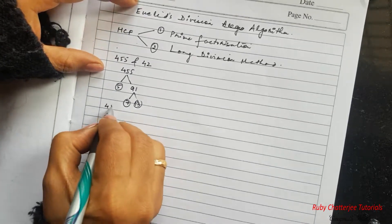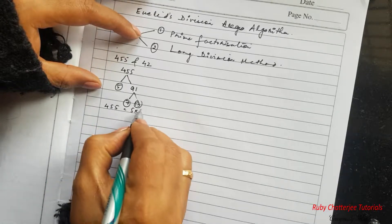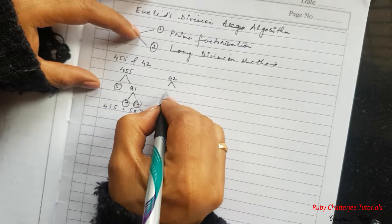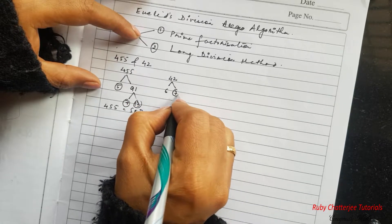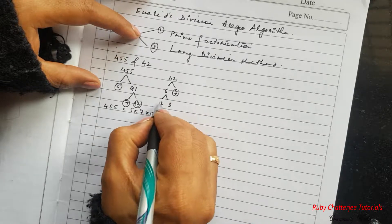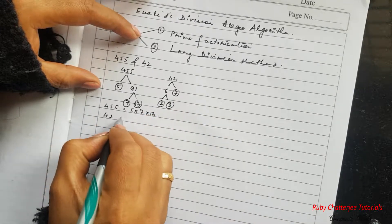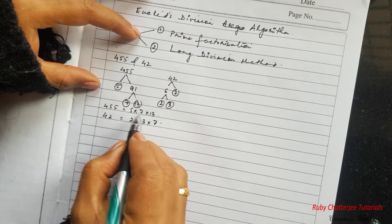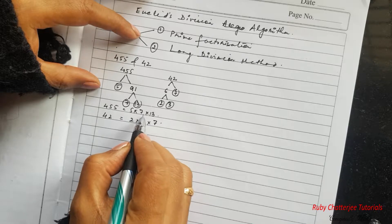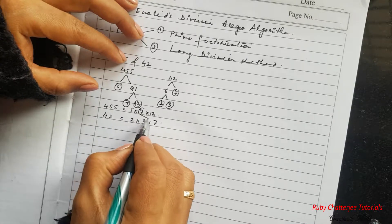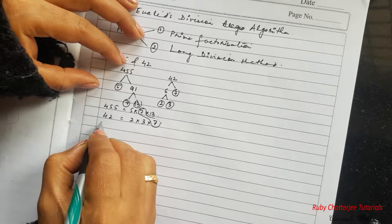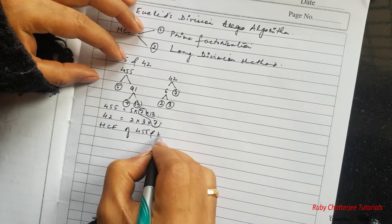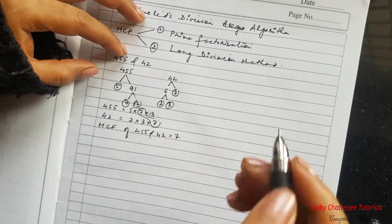So these are both prime factors. So we can write 455 as 5 into 7 into 13. And then 42 is nothing but 6 into 7, so 7 is prime and 6 is 2 into 3. So 42 is nothing but 2 into 3 into 7. Now you can clearly see that the highest common factor is nothing but the common factor 7. So the HCF of 455 and 42 is 7 by prime factorization.